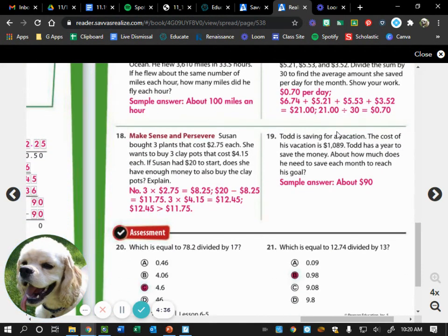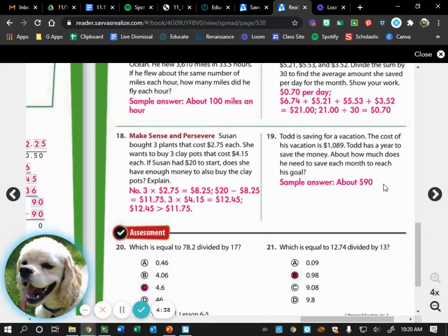And then we had number nineteen. This one tripped up a few people. Todd is saving for a vacation. The cost of his vacation is one thousand eighty-nine dollars. Todd has a year to save the money. About how much does he need to save each month to reach his goal? That word about tells us to what? Round. Round. Yes.